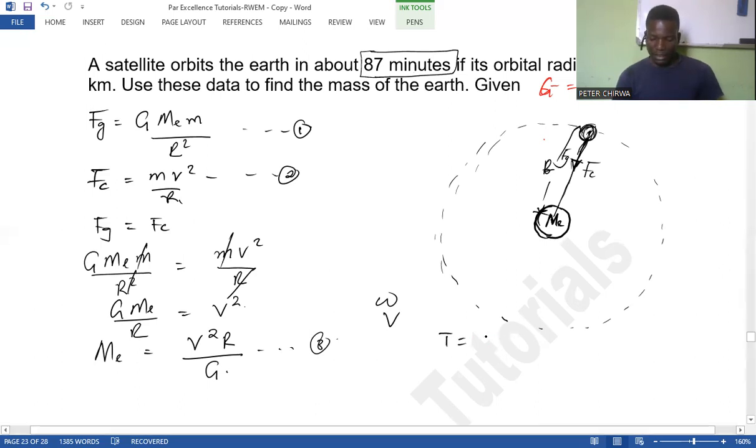Now, here, you know that what you have been given here, that is the period. A satellite orbits the Earth in about 87 minutes. That is the period. So we need to convert that period into seconds. So that period T equals 87 minutes times 60 seconds over one minute, and the period is going to be 5,220 seconds.